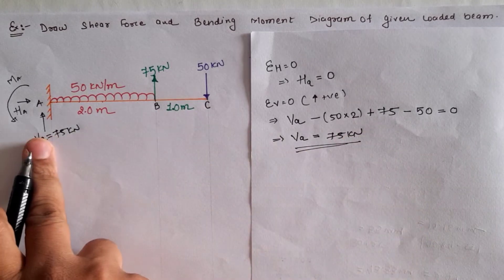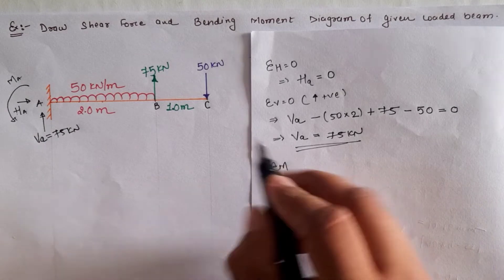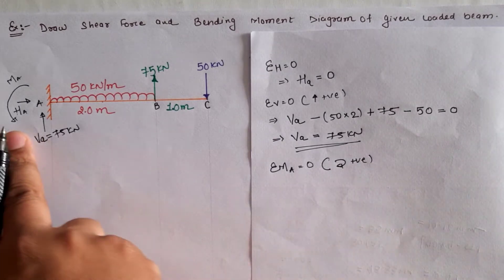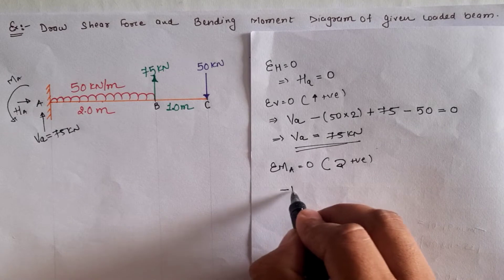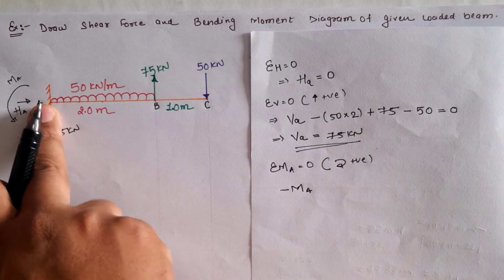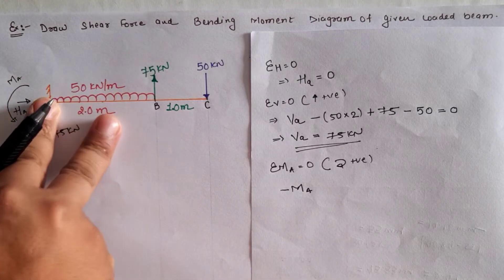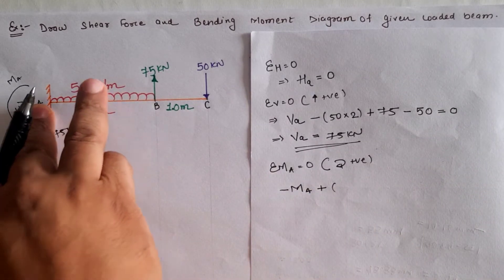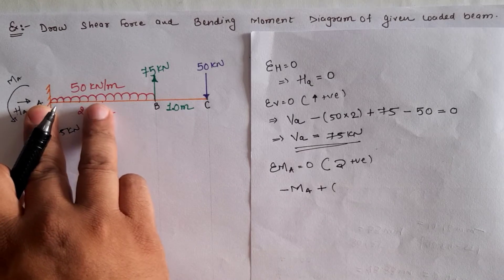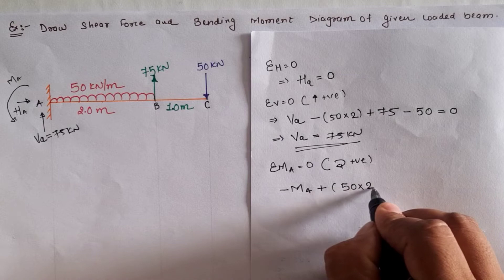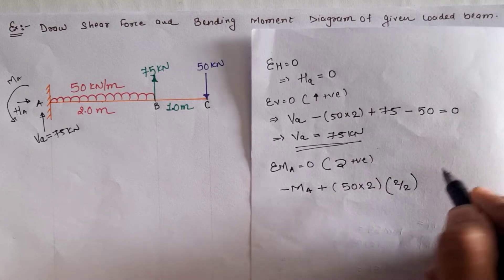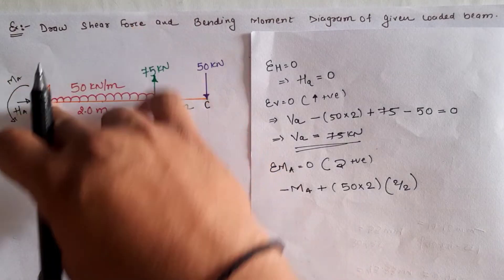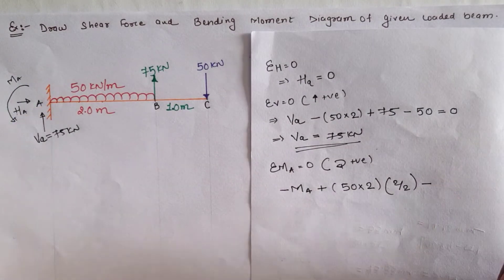The next condition is ΣM at location A = 0, assuming clockwise moment as positive. Since MA was assumed anticlockwise, it enters as negative MA. The moment due to the 50 kN/m UDL at A is clockwise and positive: load times distance times CG distance (distance/2), giving 50 × 2 × (2/2). The 75 kilonewton load creates an anticlockwise moment at A, so it is negative.